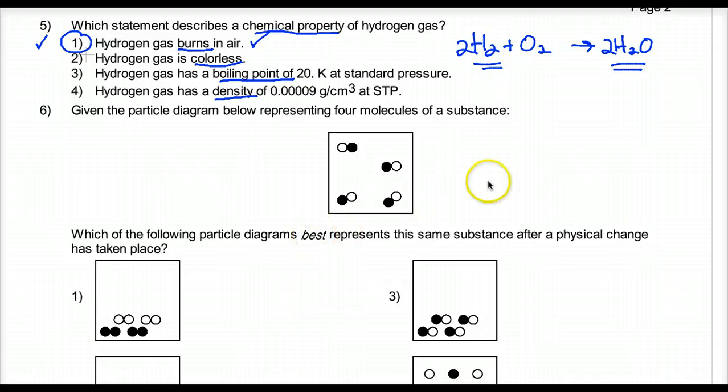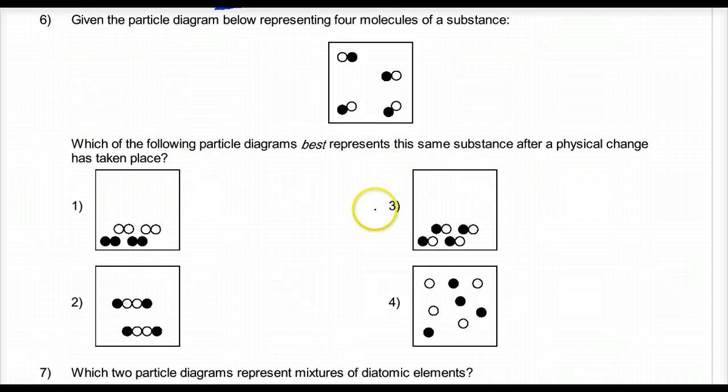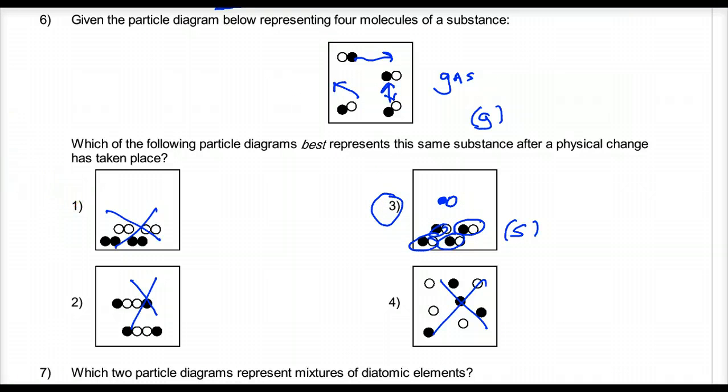So the answer is 1. Burning combustion is a chemical change. Number 6. Which of the following particle diagrams best represents the same substance after physical change? Well, if it's a physical change, the chemical formula is not changing. This could be a gas. Notice the distance between the molecules. This could be a solid or a liquid. Notice the same chemical formula. This is the same chemical formula. Same molecules. Just different distance between them. Three is the answer.